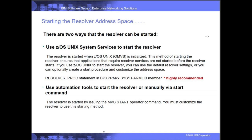The Resolver address space can be started in two ways. The recommended method is starting it when ZOS Unix (OVS) initializes — this ensures the Resolver is up before any applications start, avoiding failures if an application tries a Resolver function call before the address space is up. You do this by updating the RESOLVER_PROC statement in BPX PRMXX in SYS1.PARMLIB. You can pass a real proc name, or use default settings where OVS starts a proc named RESOLVER even if one doesn't exist in your system.